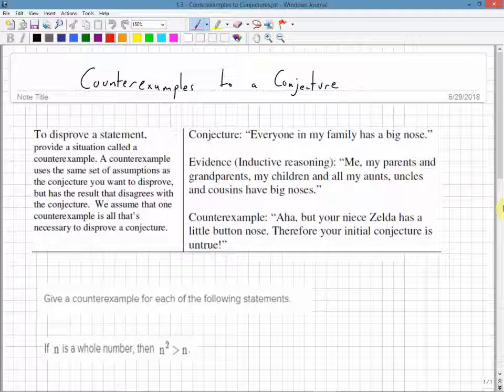Conjecture: Everyone in my family has a big nose. Evidence - this is the inductive reasoning part. The pattern: Me, my parents, grandparents, children, aunts, uncles, cousins, they all have big noses. Everybody has a big nose.